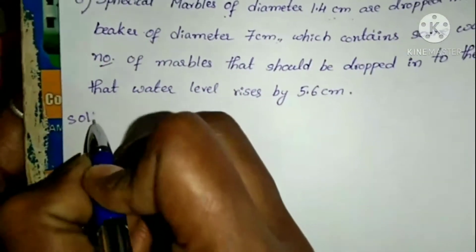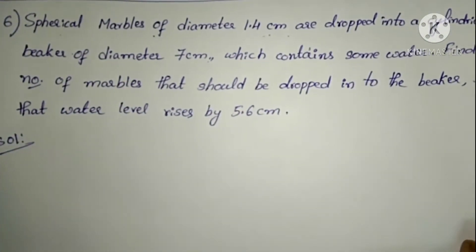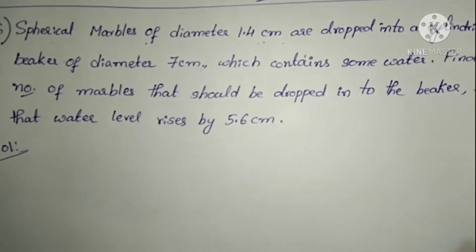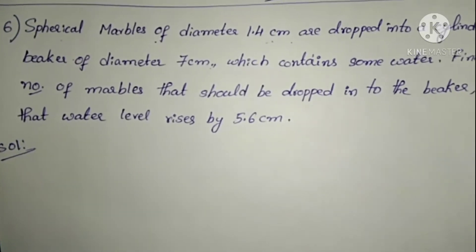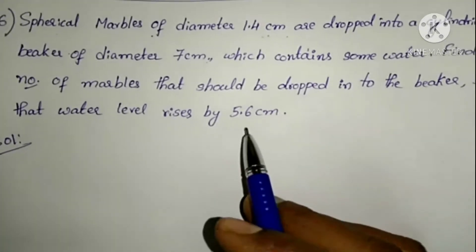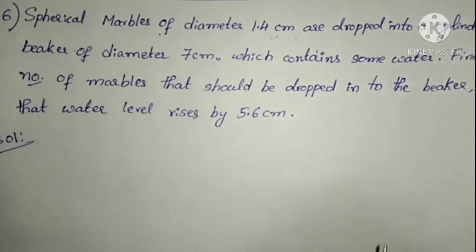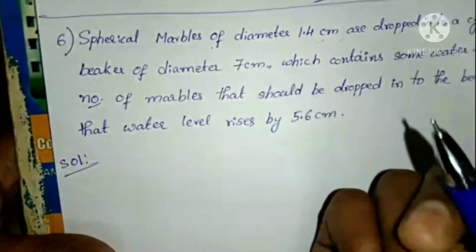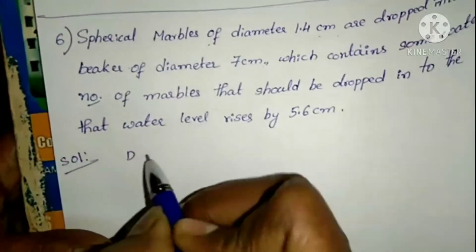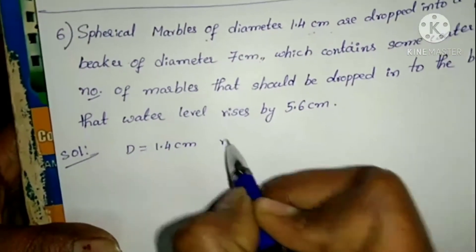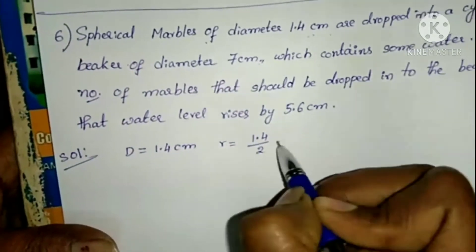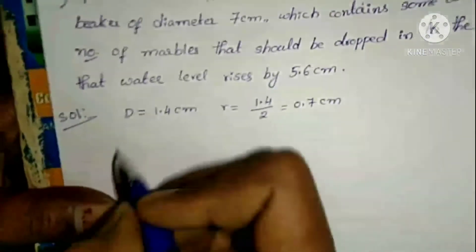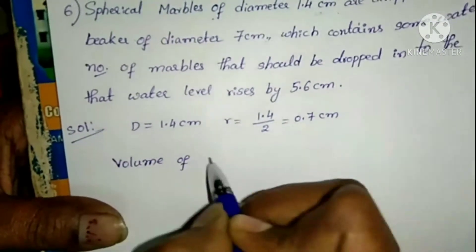The marbles are spherical and small. When dropped into the cylindrical beaker, the water level rises by 5.6 cm. The marble diameter is 1.4 cm, so radius is 1.4 ÷ 2 = 0.7 cm. We need to find the volume of spherical marbles.